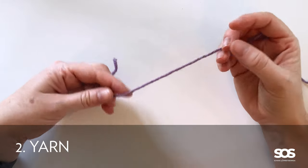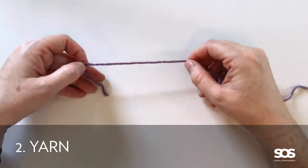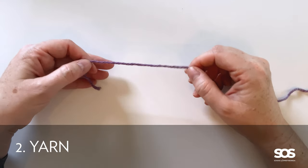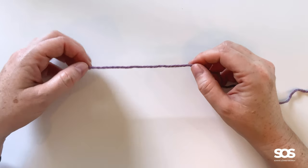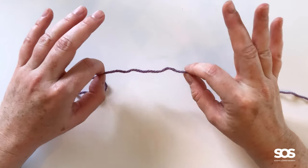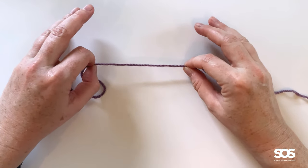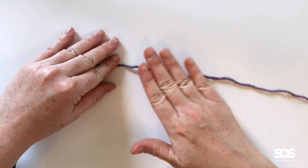The next material that you'll need is yarn and there are a ton of options for you, but I really want you to stick to a worsted weight, mostly wool blend. And the reason why is because wool has a nice elasticity or stretchiness. See how it stretches a little bit like that?